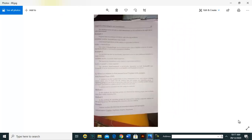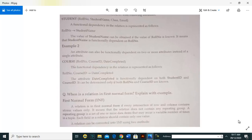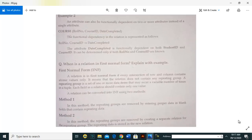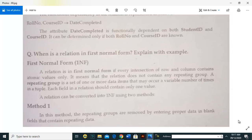Now we will see what is the first normal form. When is a relation in first normal form? A relation is in first normal form if every intersection of row and column contains atomic values. Each cell in the table should contain a single value. Double values are not atomic values.